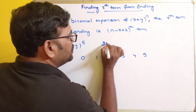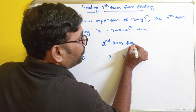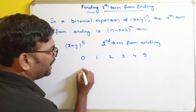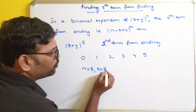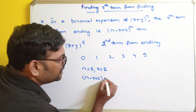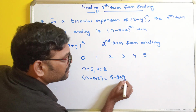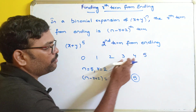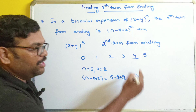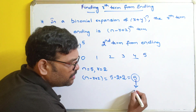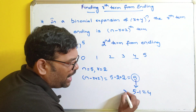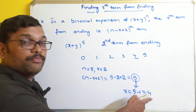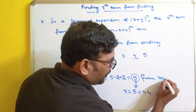Let us take the second term from the ending. So I need to find the second term from the ending. We will apply the formula: n = 5 and r = 2. The formula n - r + 2 = 5 - 2 + 2, which becomes 5. Counting 1, 2, 3, 4, 5 — that is the last but one. We know that the r plus 1th term means r = 5 - 1 = 4. So r will become 4. If it is the fifth term, r will become 4.